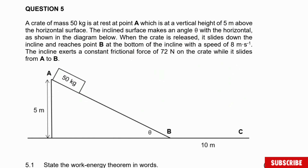This question says a crate of mass 50 kilograms is at rest at point A, which is at a vertical height of five meters above the horizontal surface. The inclined surface makes an angle theta with the horizontal. When the crate is released, it slides down the incline and reaches point B at the bottom with a speed of 8 meters per second. The incline exerts a constant frictional force of 72 newtons on the crate while it slides from A to B.